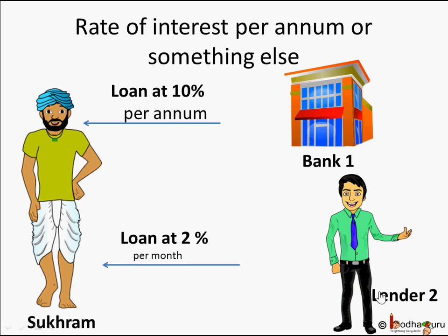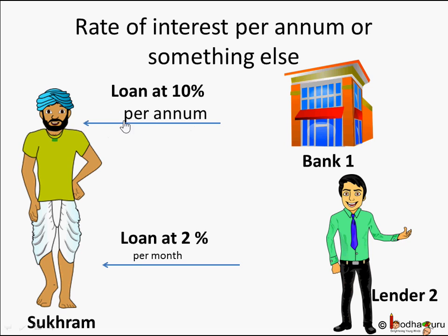We have Bank 1 and Lender 2. The bank says it will give a loan at 10% per annum. But this lender says he will give a loan at 2% per month - he said 'per month' very quietly, in very small print. And you think: I learned in maths that for a loan a lower rate of interest is better, so 2% is less than 10% - I should go for Lender 2, right? But remember, children - per annum and per month: does that make a difference?